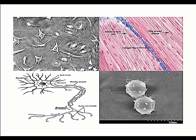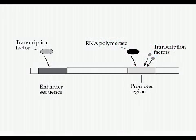Different transcription factors bind to different parts of the DNA. For example, the cells in the pancreas might have transcription factors present that bind to the parts of the DNA around the genes involved in creating insulin. They bind to those parts of the DNA and also bind to RNA polymerase to encourage that gene to be transcribed. At the same time, the transcription factors responsible for creating hydrochloric acid won't be present in the pancreatic cell, so those genes won't be transcribed.